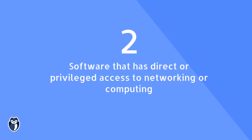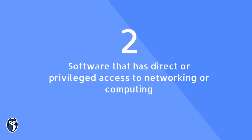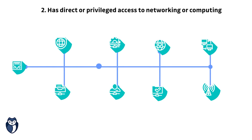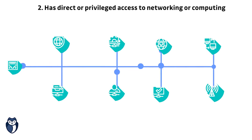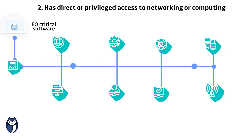The next component talks about having direct or privileged access to networks. A network can really be considered the highway to other points in your organization. So anything that has a direct link to this network — this highway — is the perfect entry point or initial access point for an attacker to really get their foothold in more critical areas of your organization.